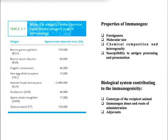The next property is susceptibility to antigen processing and presentation. This means that a molecule must be able to be recognized by a particular cell so that it can be degraded efficiently and presented by its MHC molecule on the cell surface.